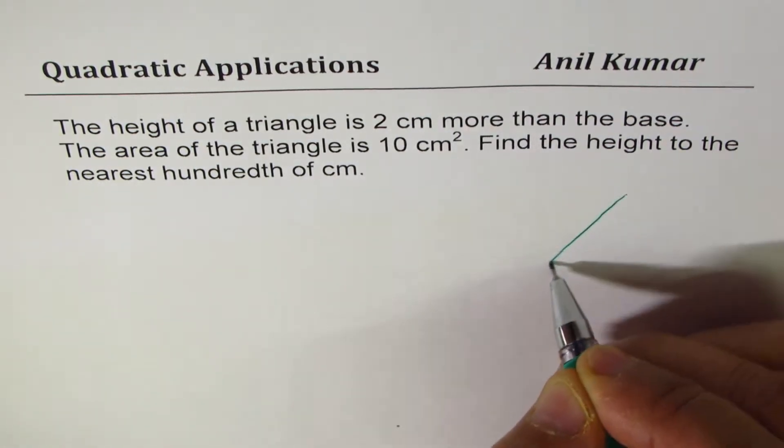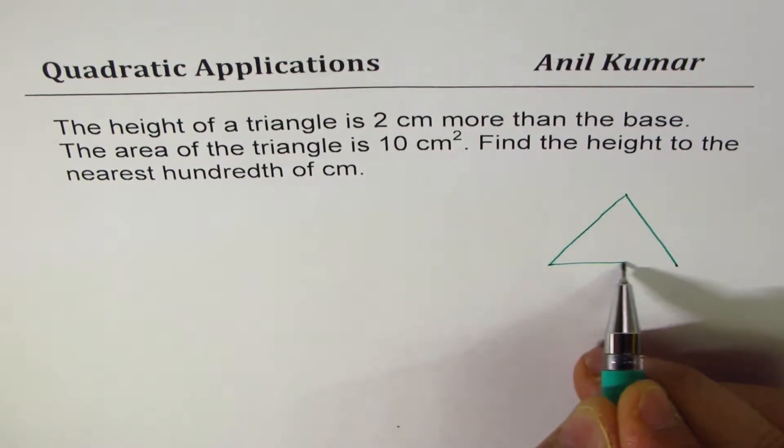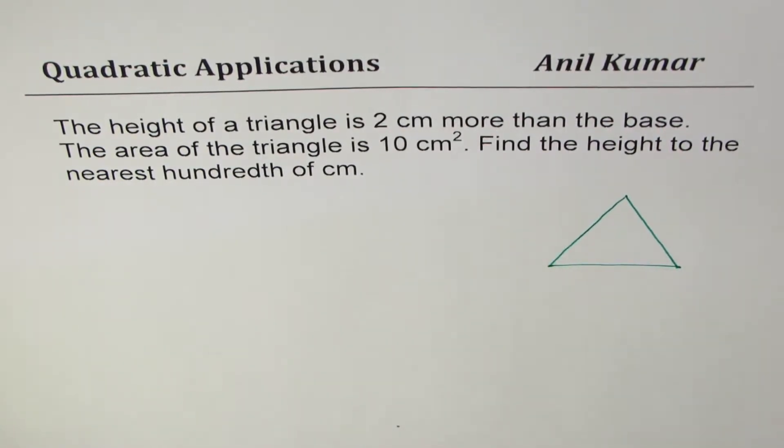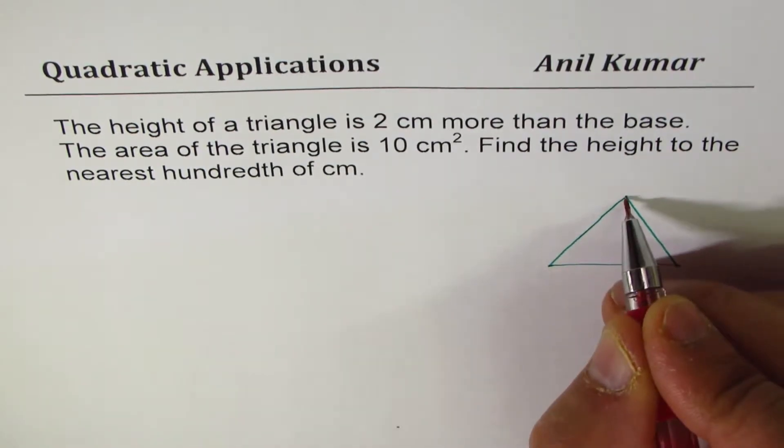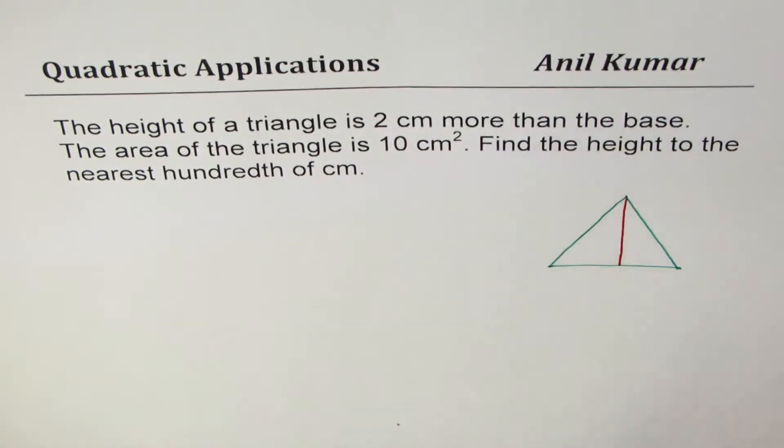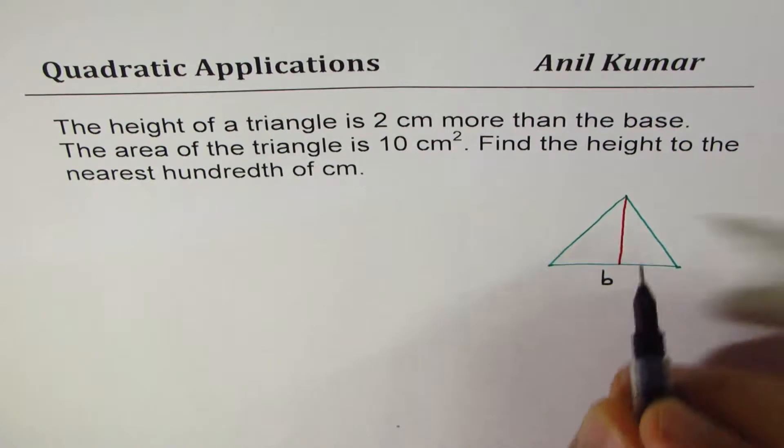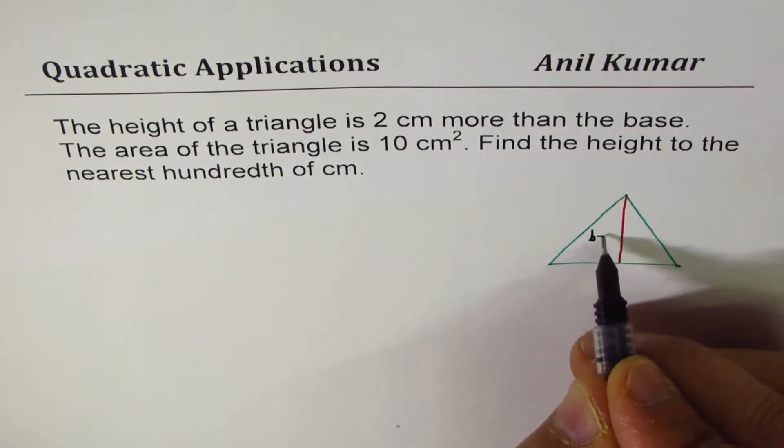Whenever it is written 'nearest' that means you'll be applying quadratic formula. Now that's the triangle given to us and we are saying that the height of the triangle is two centimeters more than the base. So we can define the variables: let b be the base and height will be b plus 2.